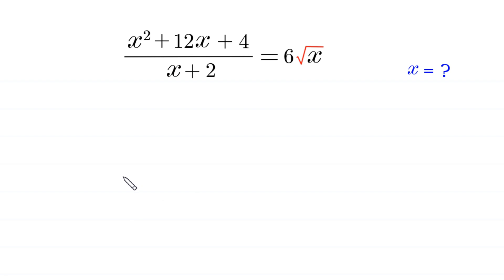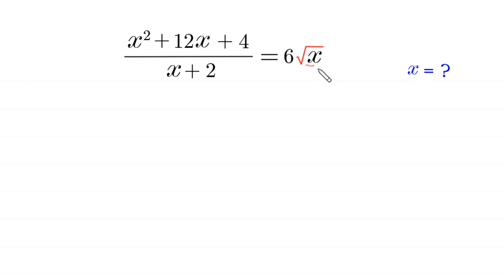Hello everyone, welcome to how to solve this very nice algebra equation: x squared plus 12x plus 4 divided by x plus 2 is equal to 6 times root x. Our job is to find all possible values of x. Since x is under a square root, x must be greater than or equal to 0.